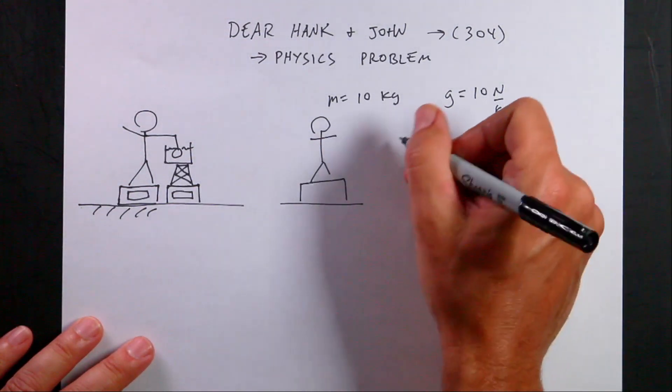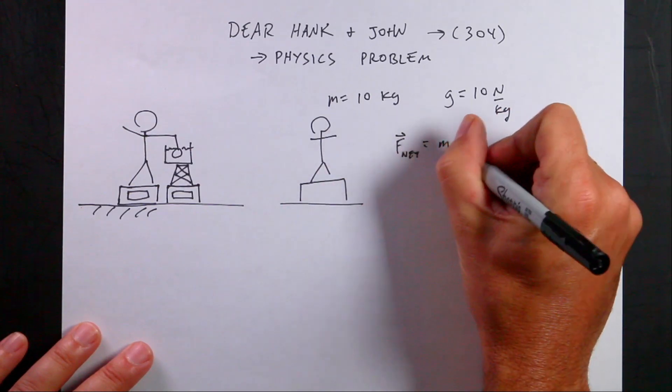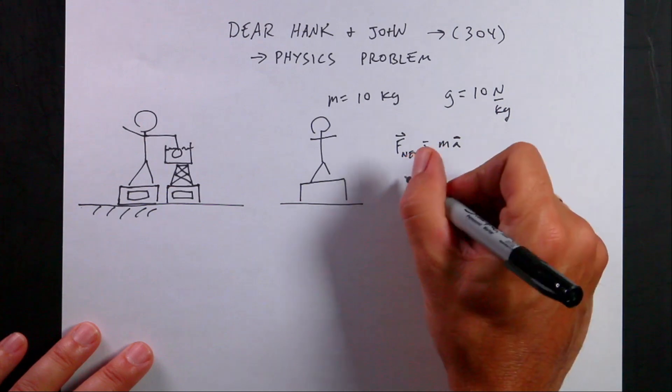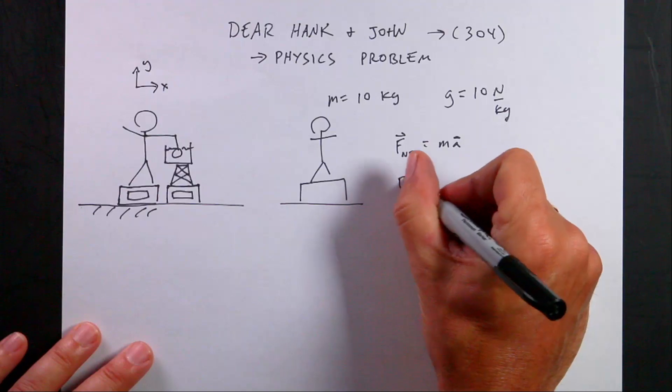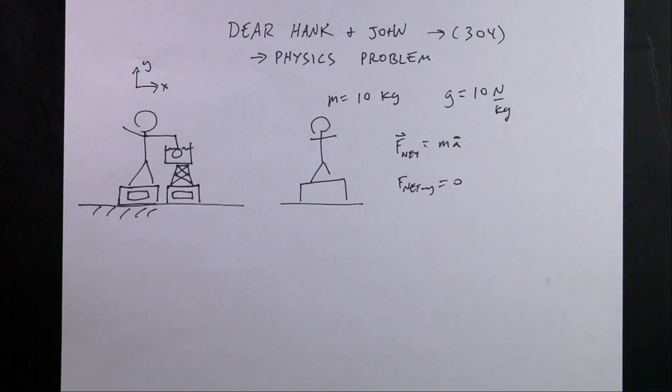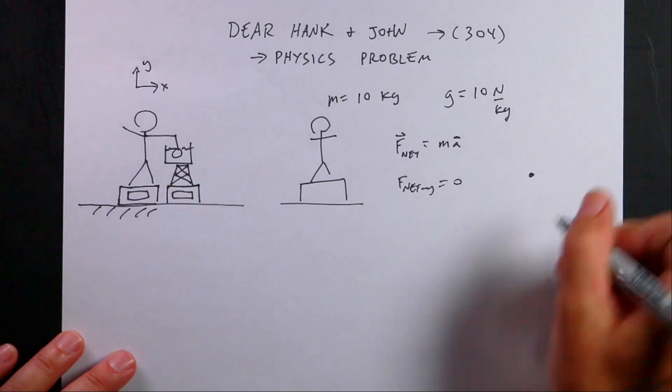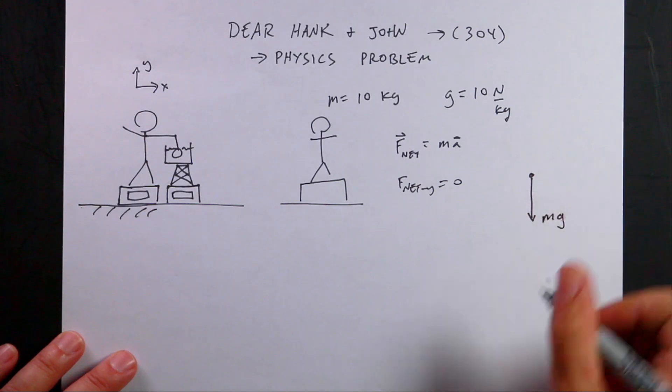If this person is at rest, Newton's second law says F_net equals mass times acceleration. But if the acceleration is zero, then the net force has to be zero. So I can say in the y direction, F_net_y equals zero. I know the total force on this person is zero.